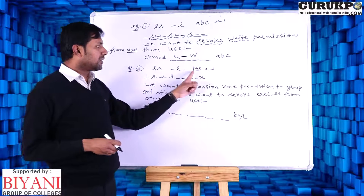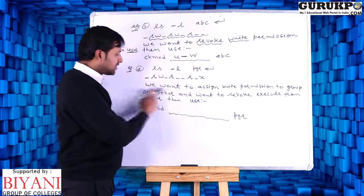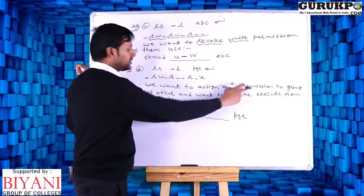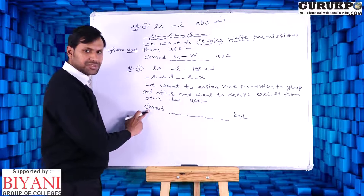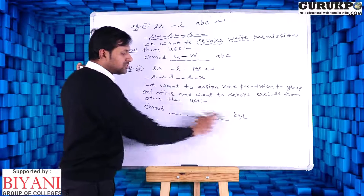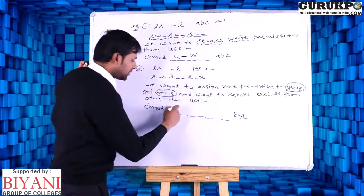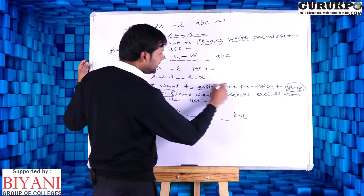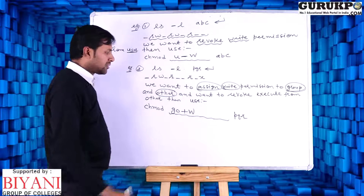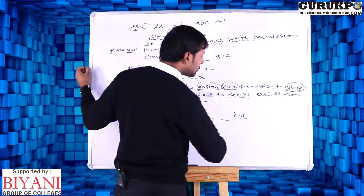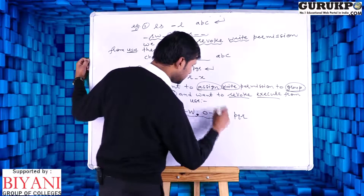Example two: let the file be pqr. I want to assign write permission to group and other, and revoke execute permission from others. The command is: chmod go+w,o-x pqr. Here go means group and other, plus assigns write permission; then comma separates the second change — o for other, minus to revoke, x for execute.